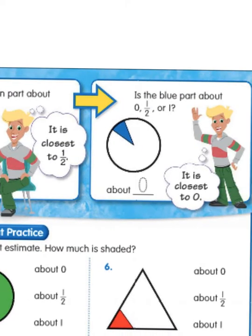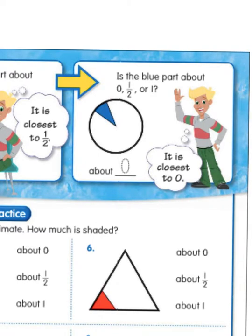And the last one. Is the blue part about zero, one half, or one? Well, barely any of it's shaded in, so it is closest to zero. Let's go ahead and get started now.